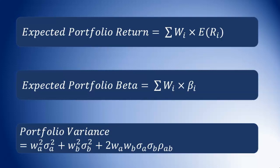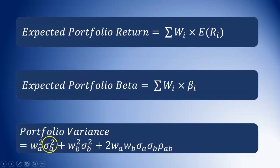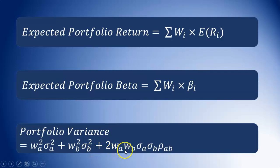Third, we have the portfolio variance, and this is really the variance for a two-asset portfolio. A represents the first asset and B represents the second asset — sometimes interchanged with one and two. The formula is: weight of the first asset squared times the variance for the first asset, plus the weight of the second asset squared times the variance for the second asset, plus 2 times the weight of the first asset times the weight of the second asset times the standard deviation of the first asset times the standard deviation of the second asset, multiplied by the correlation coefficient between both assets.